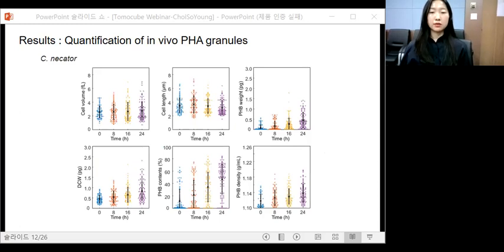These are quantification results for C. necator cells. For statistical analysis, about 100 cells were randomly selected at each sampling time. As I explained, we obtained the values of cell volume, length, PHA weight, cell weight, PHA contents, and PHA density for single cells.